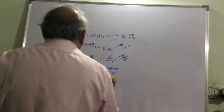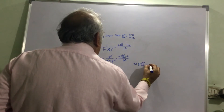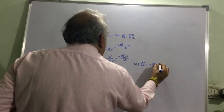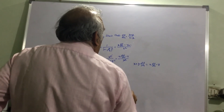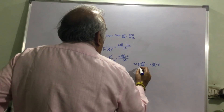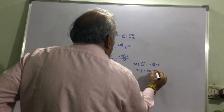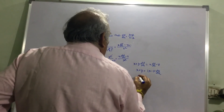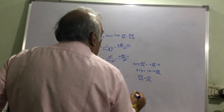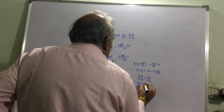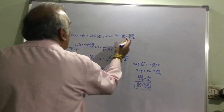So this term cancels with this and this cancels with this. We are left with x plus y times dy/dx equal to x dy/dx minus y. Taking the y terms to one side, we get dy/dx equal to (x plus y) divided by (x minus y), which is what we were supposed to prove.